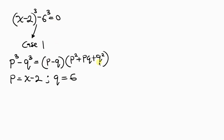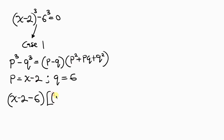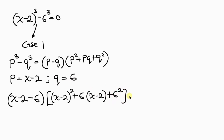Writing this in that form: p minus q gives x minus 2 minus 6, times p squared plus pq plus q squared, which is x minus 2 squared, plus 6 times x minus 2, plus 6 squared, equal to 0.